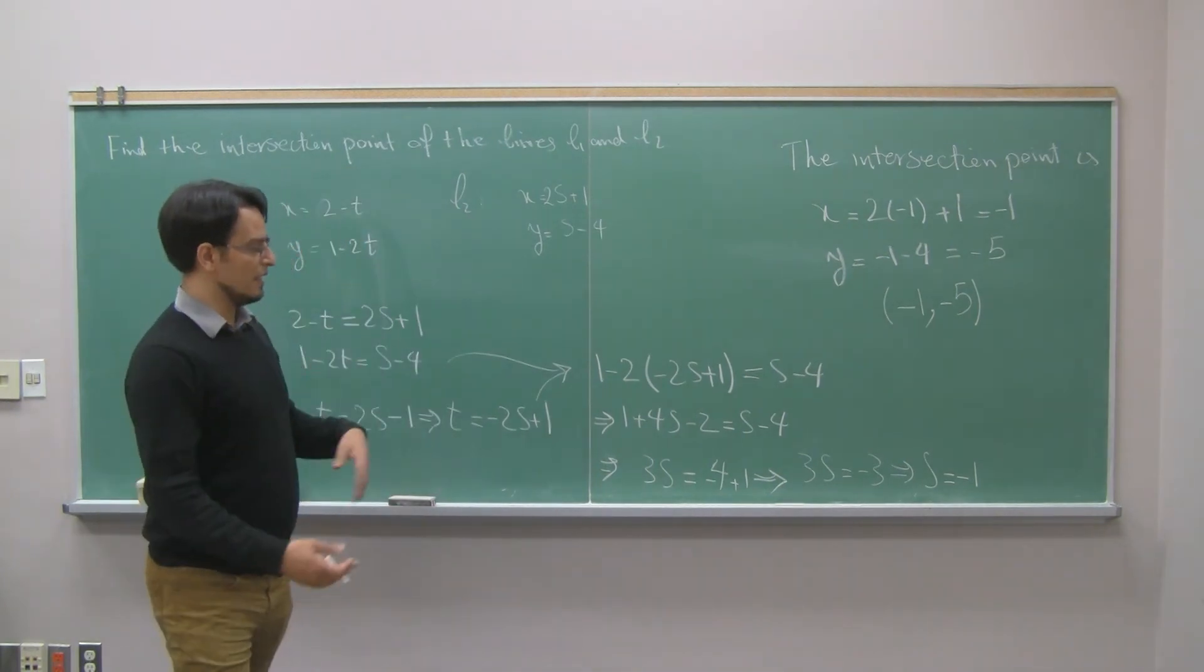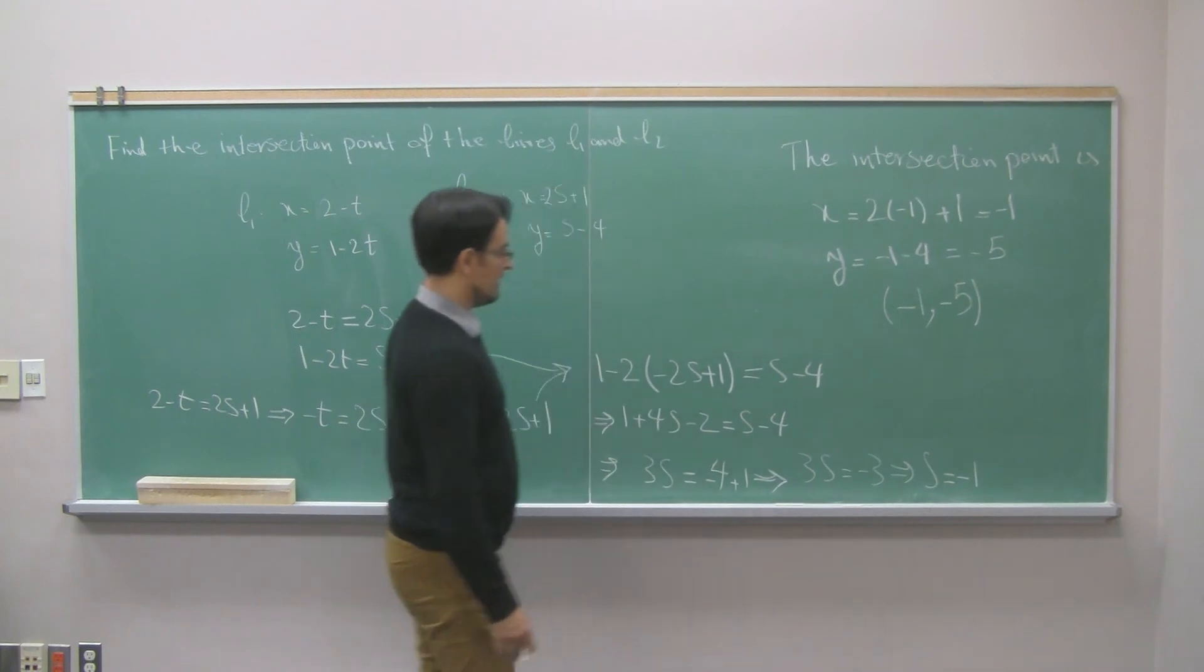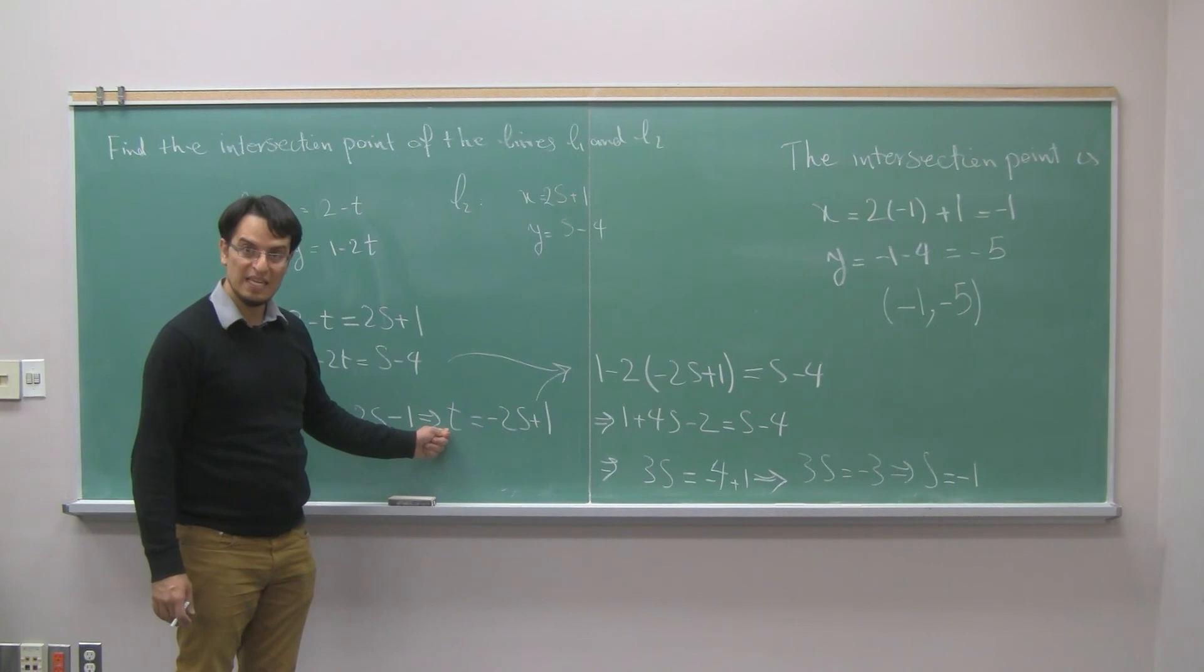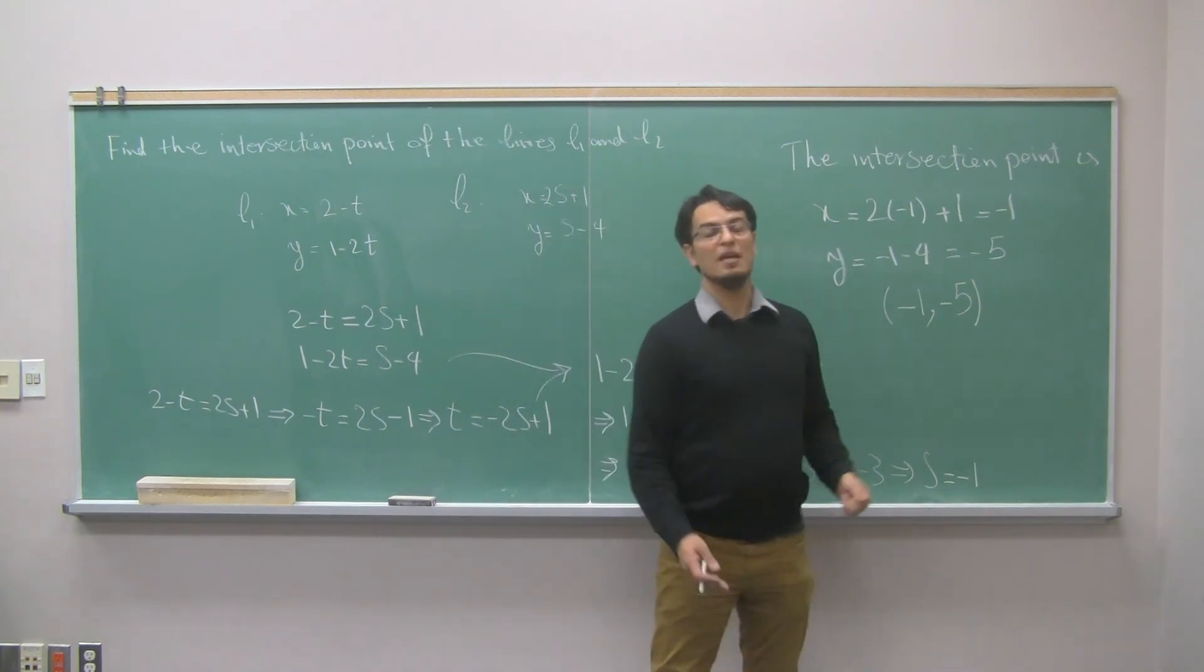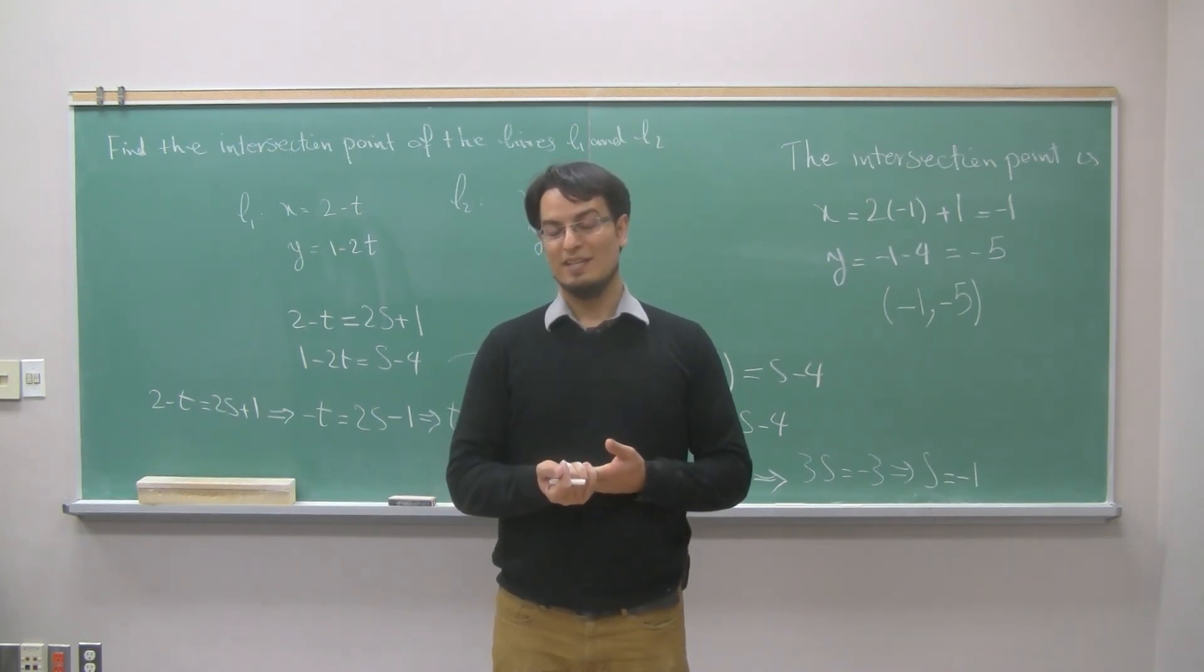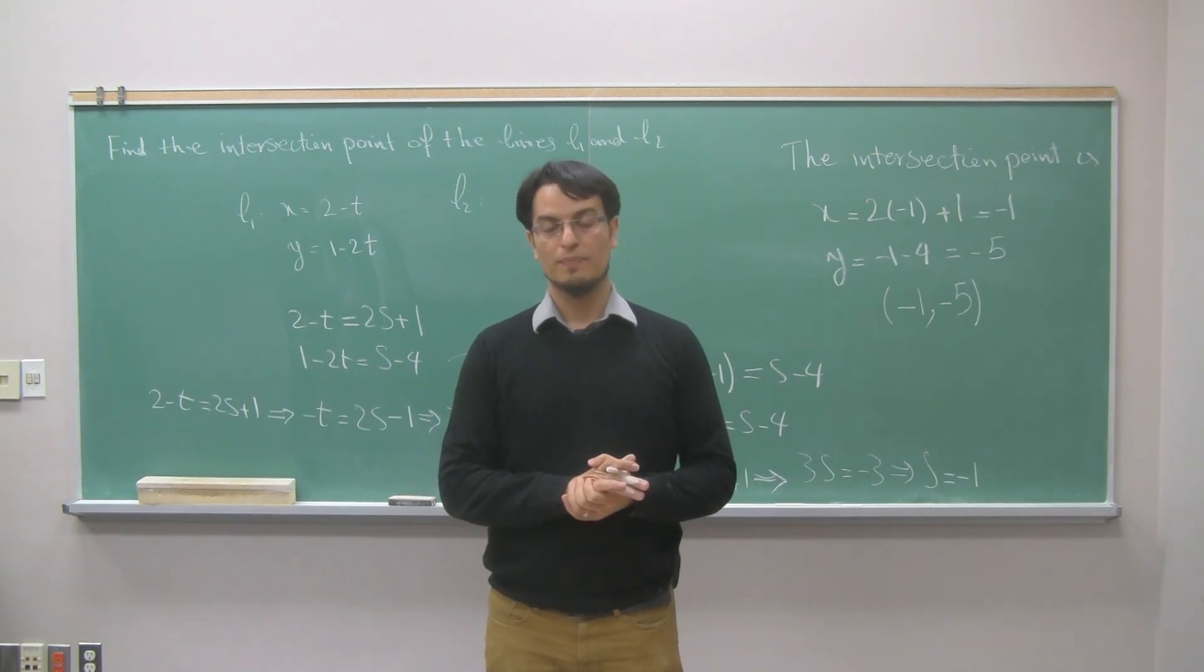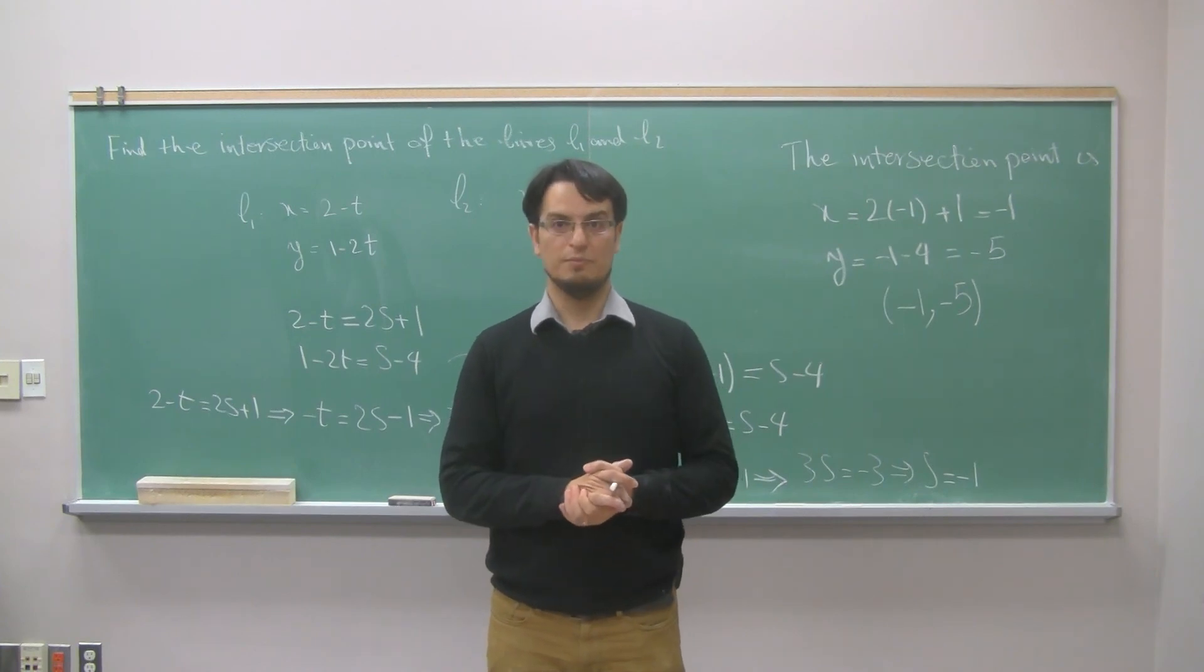One can do something else. I can plug in s equals negative 1 in this equation and find t, and then plug in t here, and you should get exactly the same number. That's just a checking point. You can do that to check and figure out if there is any problem with your solution or not. If you have done a good job, in both cases you have to get exactly the same number.